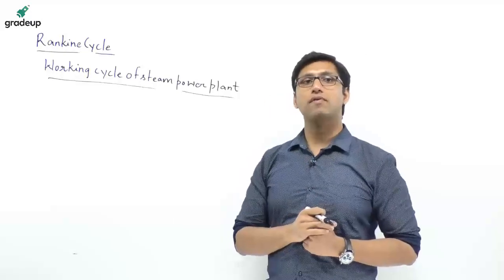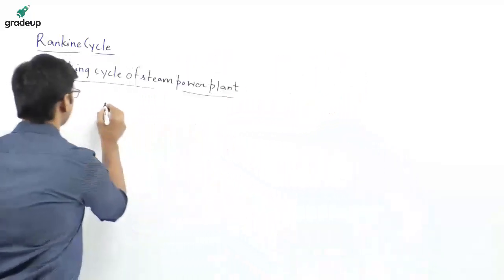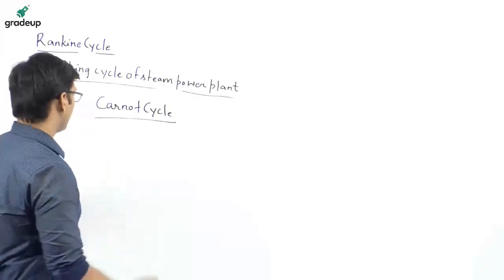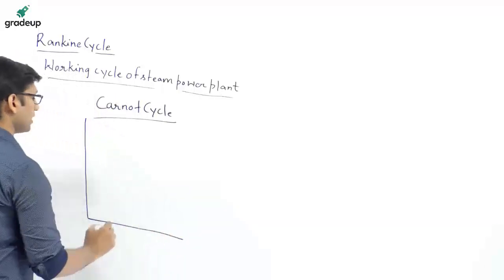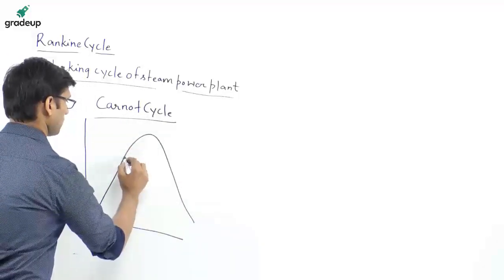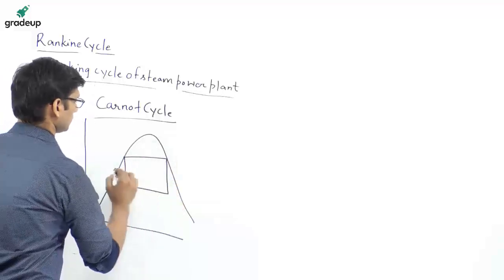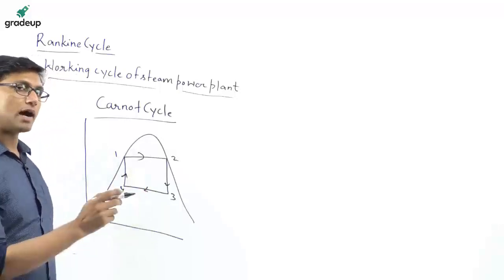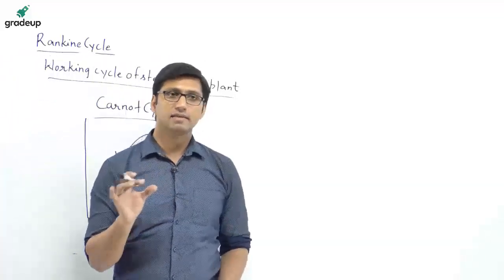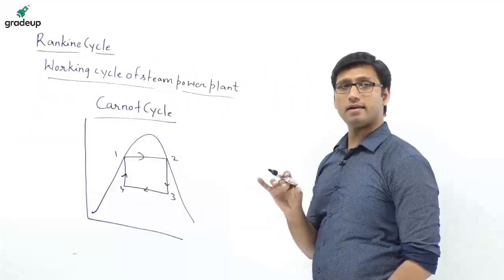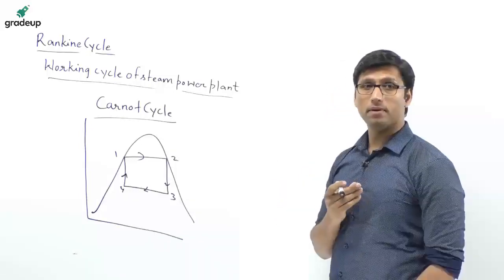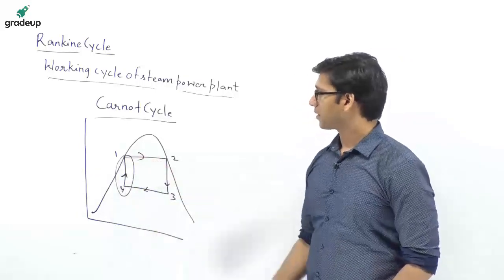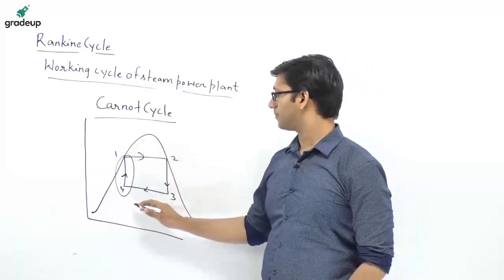The reason why the Carnot cycle cannot be used for the steam power plant: suppose the Carnot cycle is used here. In the Carnot cycle, there are basically four processes — two isothermal and two isentropic. If you represent a Carnot cycle on a T-S diagram, this is the Carnot cycle. In the steam power plant, there are four important components: pump, boiler, turbine, and condenser. This is compression, this is heat addition, then this is expansion, and then this is heat rejection.